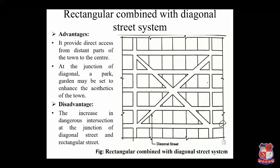Washington, D.C., in the USA is an example of this type of system. The major advantages are: first, it provides direct access from distant parts of the town to the center; second, at the junction of diagonals, a park or garden may be set up to enhance the aesthetics of the town. The main disadvantage is the increase in dangerous intersections at the junction of diagonal streets and rectangular streets.